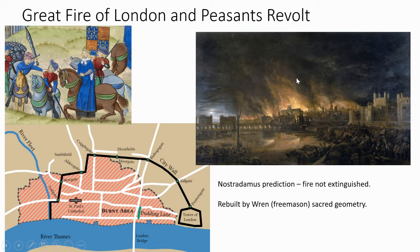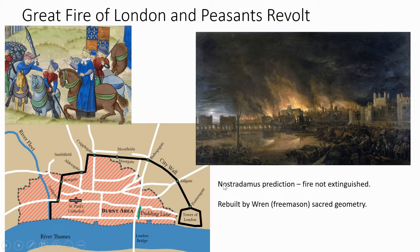Two things I wanted to mention: the Peasants' Revolt, which came to a head in the City of London. The leader was Wat Tyler, who was killed by the Lord Mayor of the City of London at the time. Also, the Great Fire of London started and burnt out most of this area. I read that Nostradamus had predicted the Great Fire of London, so people knew about it and were reluctant to extinguish it because it was part of the city's destiny according to Nostradamus — though I don't know how true that is. That allowed the city to be rebuilt by Sir Christopher Wren, who designed St Paul's Cathedral and many other buildings.